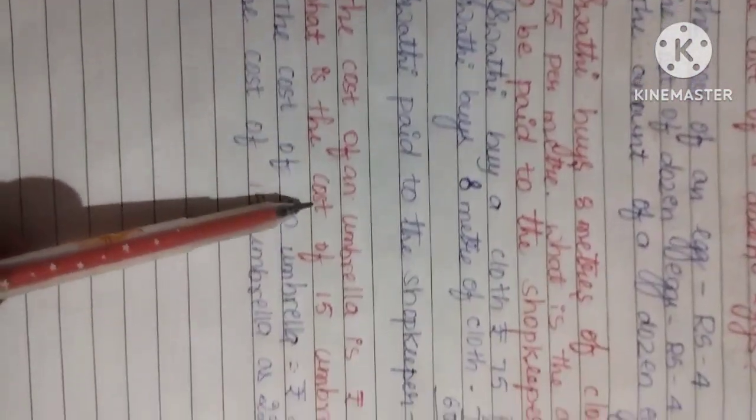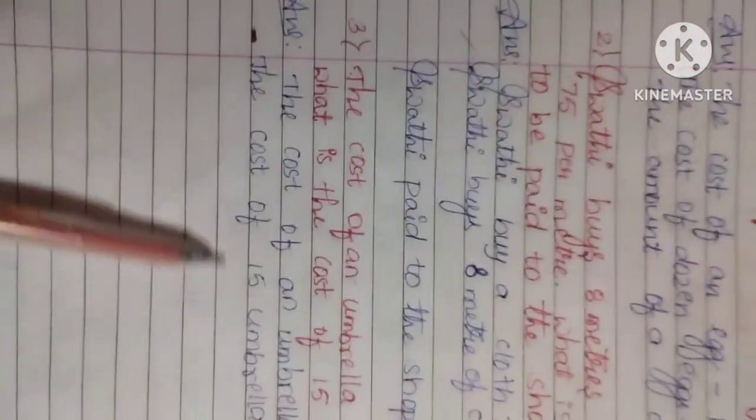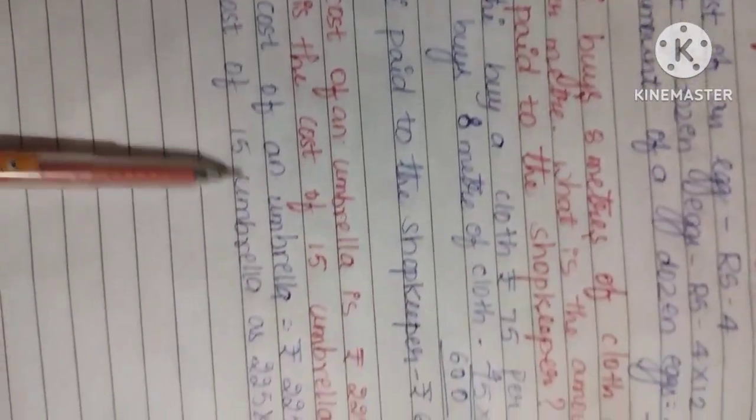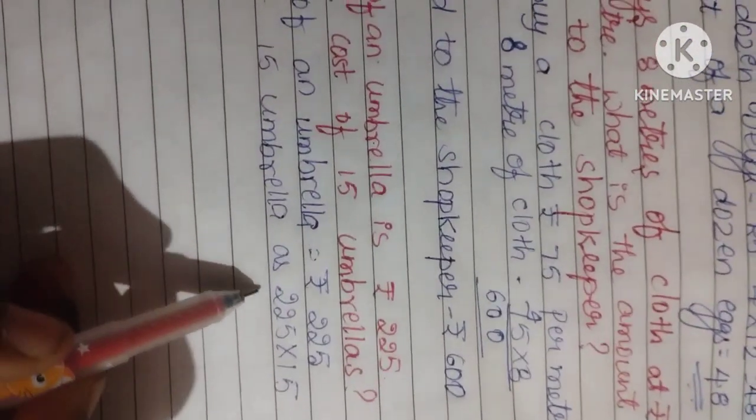Next, the cost of an umbrella is 225 rupees. What is the cost of 15 umbrellas? We need to calculate this now.